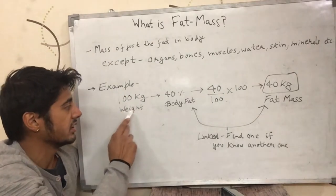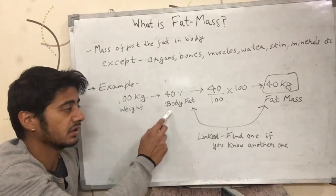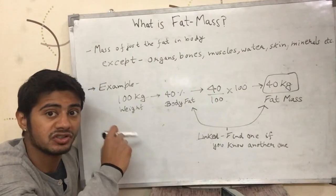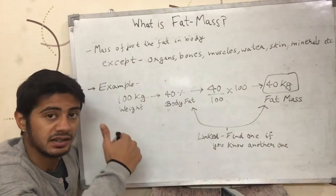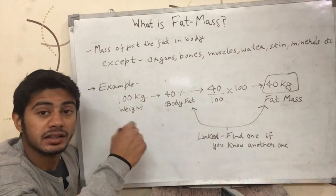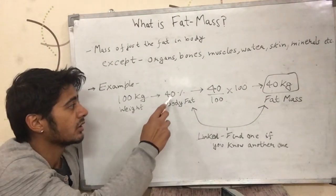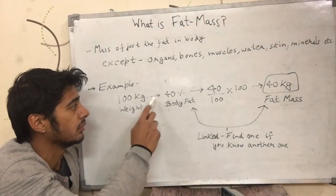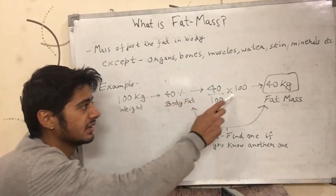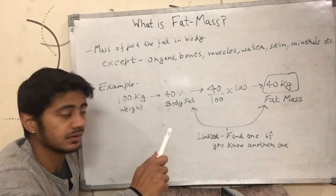For example, there is a 100 kg guy and he has 40% body fat. We have talked about what body fat percentage is in the previous videos. So that guy has 40% body fat, which means that guy has 40 kilograms of fat mass.